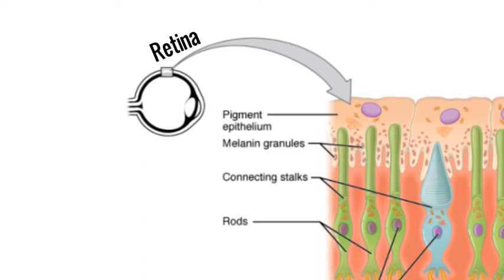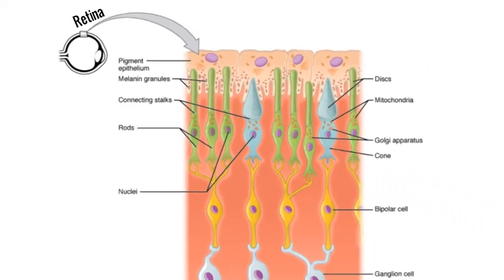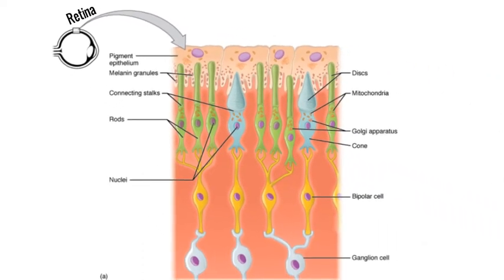Real rod photoreceptors in your eye are also unique in that they are maximally active when there is no stimulus or light hitting them. In the dark, they release neurotransmitters onto neurons called bipolar cells. When light photons hit rods, they reduce the release of neurotransmitters.